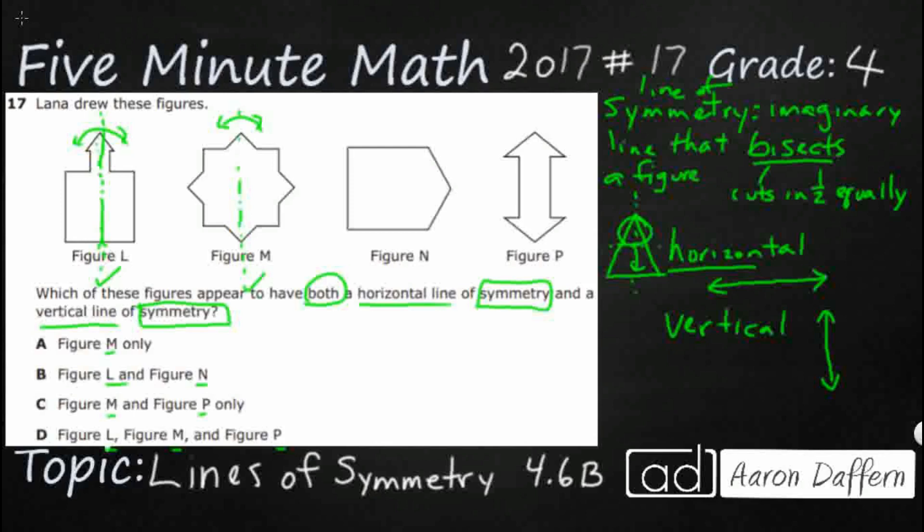N does not have a vertical line of symmetry. If I were to try to fold this in half with that vertical line, you see this part right here? When I were to fold that over, it would kind of stick out like this. And remember, vertical line of symmetry has to be exact, so not a vertical line of symmetry. And we've got figure P, definitely you can fold those in half.